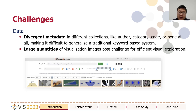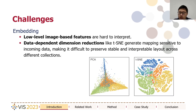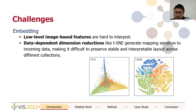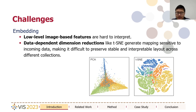Second, large quantities of visualization images also pose a challenge for efficient visual exploration and browsing. In addition, in terms of the embedding, low-level image-based features extracted by either feature engineering or deep neural networks are hard to interpret. And the commonly used dimension reduction methods like t-SNE are data dependent, which means they generate totally different layouts for different datasets, making it difficult to preserve a stable and interpretable layout across different collections.